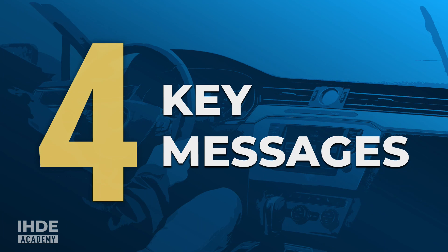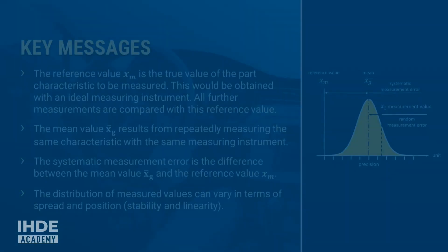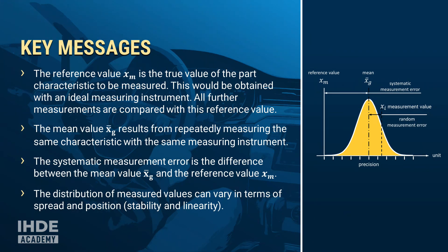That was a lot of new information. To conclude, here are the five most important key messages: The reference value xm is the true value of the part characteristic, obtained with an ideal measuring instrument. The mean value xg bar results from repeatedly measuring the same characteristic with the same measuring instrument. The systematic measurement error is the difference between xg bar and xm. The distribution of measured values can vary in terms of spread and location, stability, and linearity.